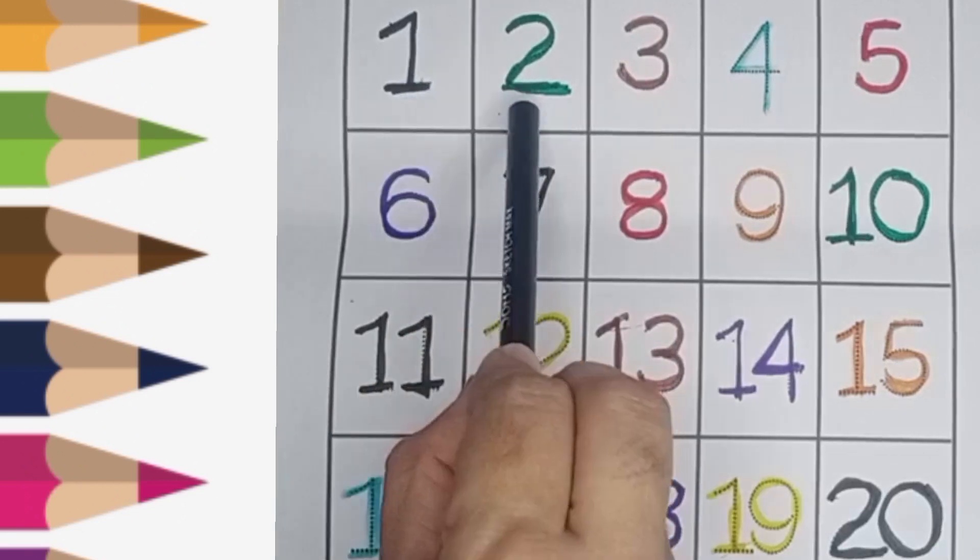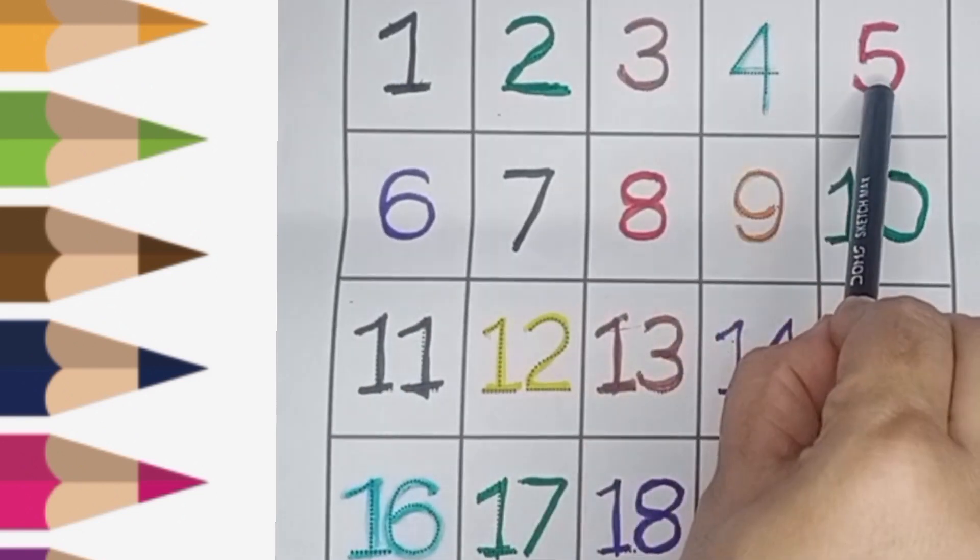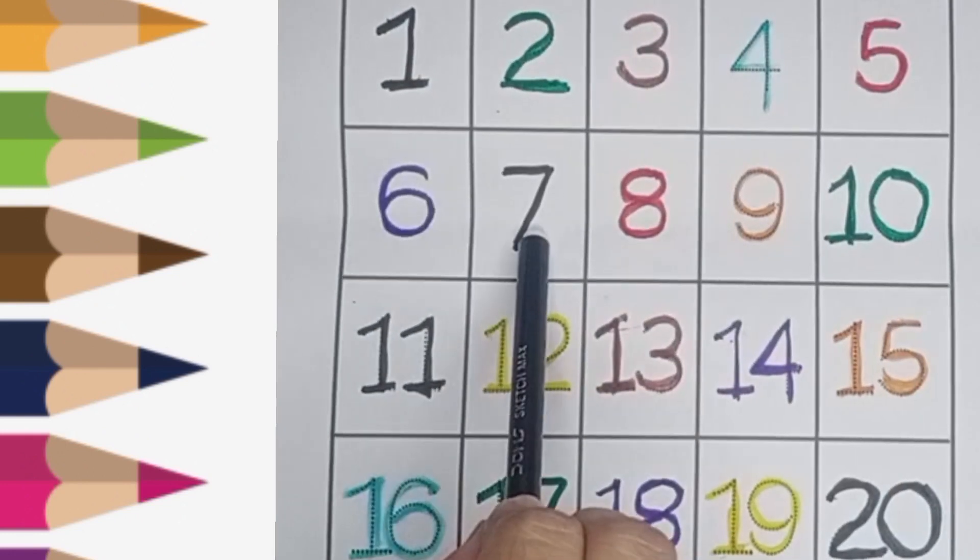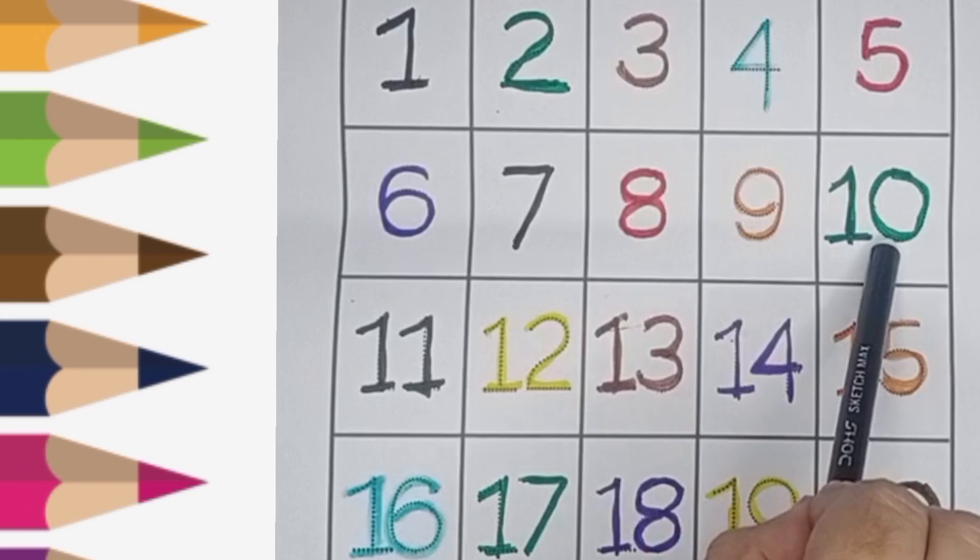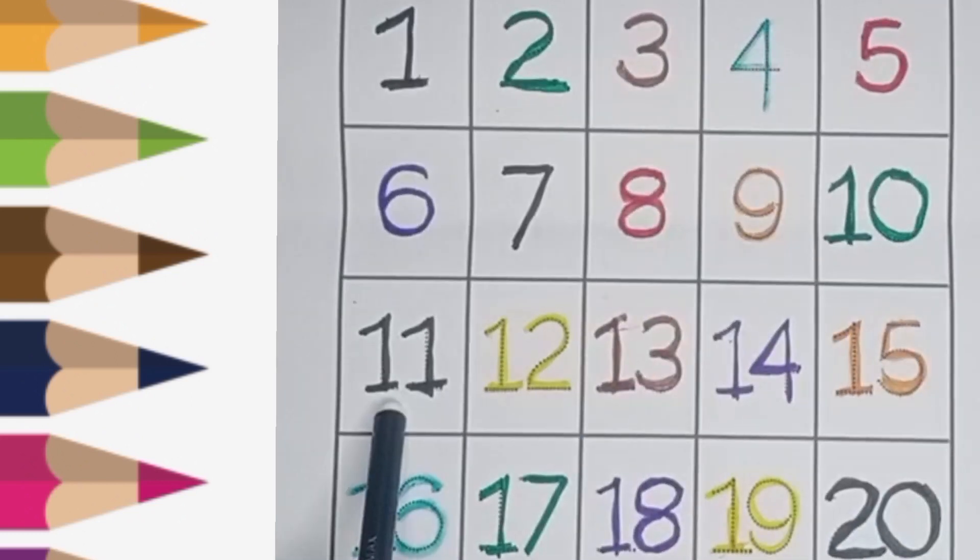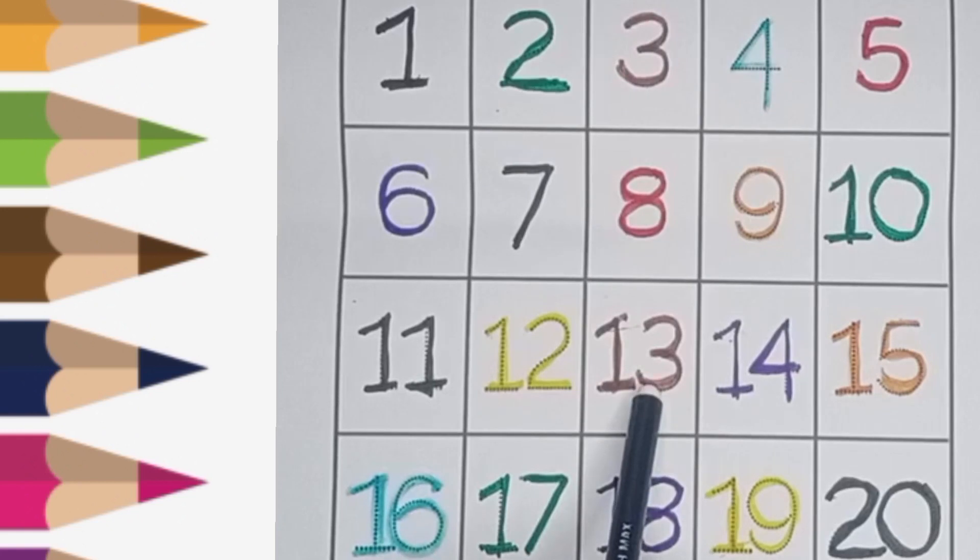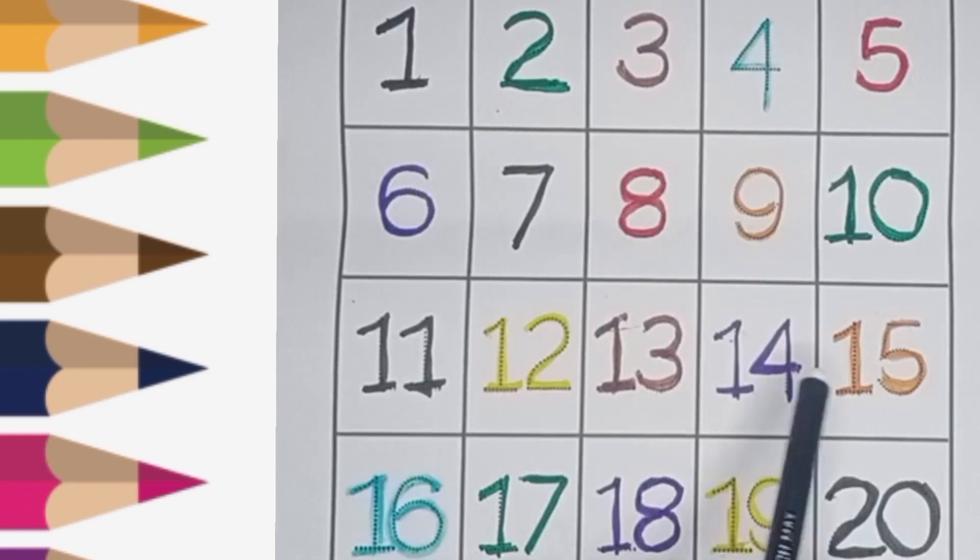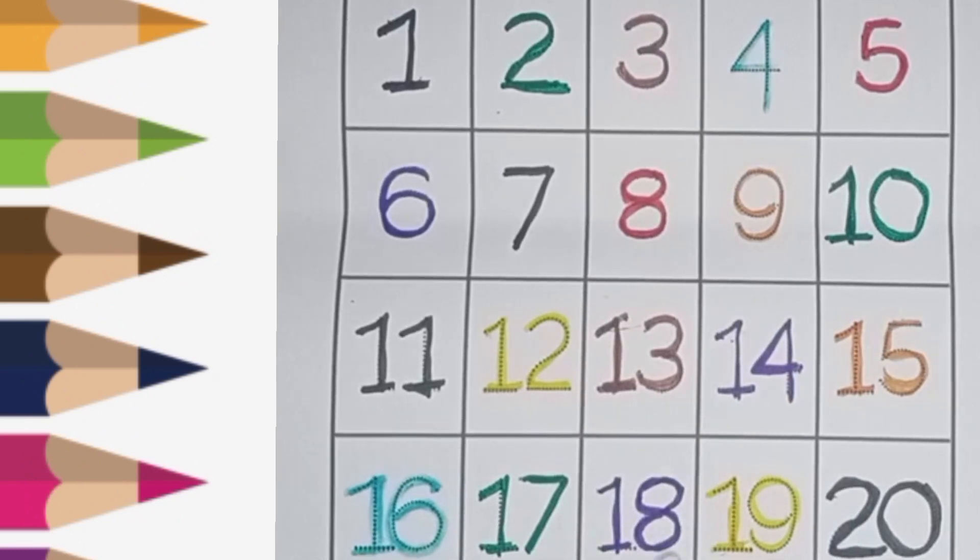One, two, three, four, five, six, seven, eight, nine, ten, eleven, twelve, thirteen, fourteen, fifteen, sixteen, seventeen, eighteen, nineteen, twenty.